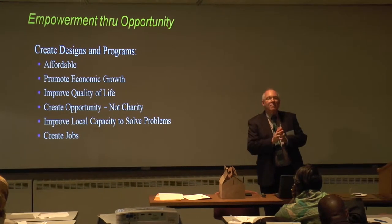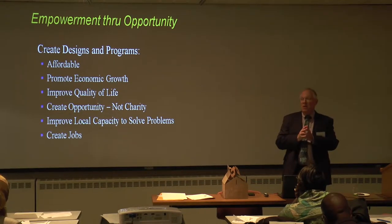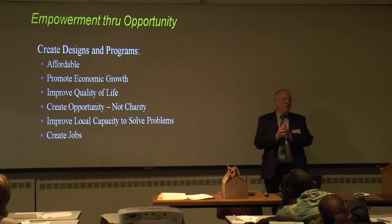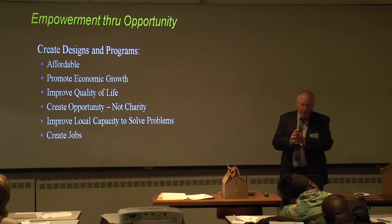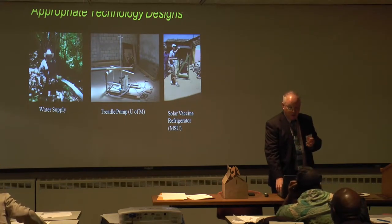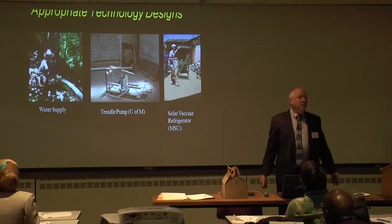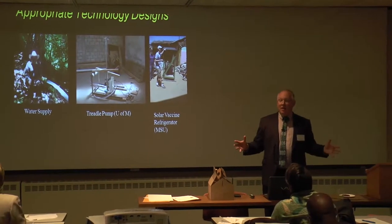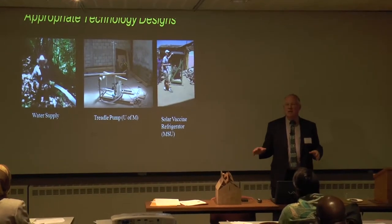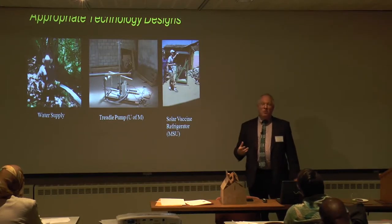We don't create charity and we don't give things away. We improve local capacity to solve problems. A lot of times that means working for five years with a local group called the Water Committee to get a water supply built for a village. We're also looking to create jobs. Here are some examples of appropriate technology: a water supply, a treadle pump — a stair-step machine that pumps water for rural farmers — and a solar vaccine refrigerator.